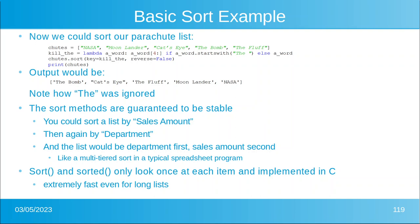When we sort our parachute list, the output would be as you see on screen — notice how the word 'The' was ignored. The sort methods are guaranteed to be stable, meaning they won't rearrange things just because you call them again. So if you sort a list by sales amount and then again by department, it works like a multi-tiered sort in a spreadsheet — listed by department and then by sales amount. Sort and sorted only look at each item one time, and they are implemented in C — essentially machine language — making them extremely fast even for very long lists.